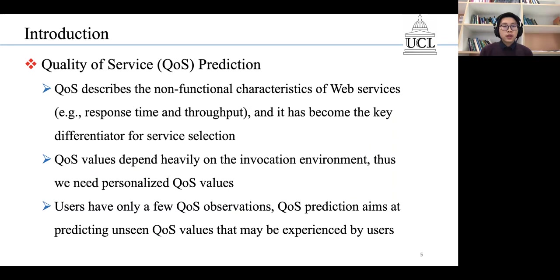Quality of service, or QoS, has become the key differentiator for service selection. QoS describes the non-functional characteristics of web services, such as response time and throughput.